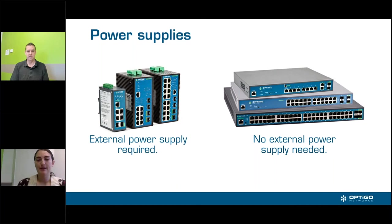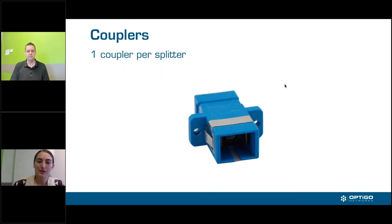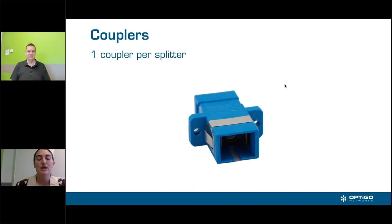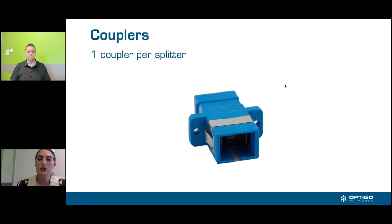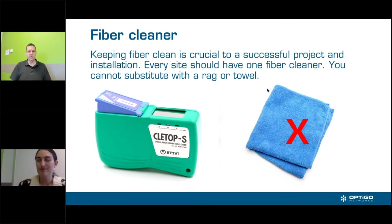Couplers are small devices that fit on the end of a piece of fiber and allow you to connect two pieces of fiber together. If you are going to be running long-lead splitters you can connect them directly together using a coupler, rather than running fiber up the building. We always recommend one coupler per splitter. You don't have to cut the fiber or use a fiber tech — you simply bring it in and plug them together, no different than an Ethernet coupler.